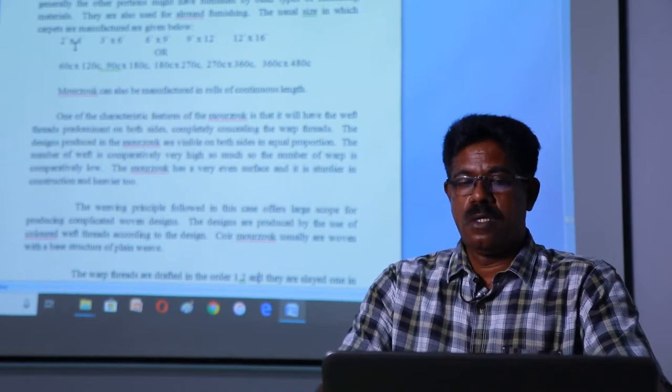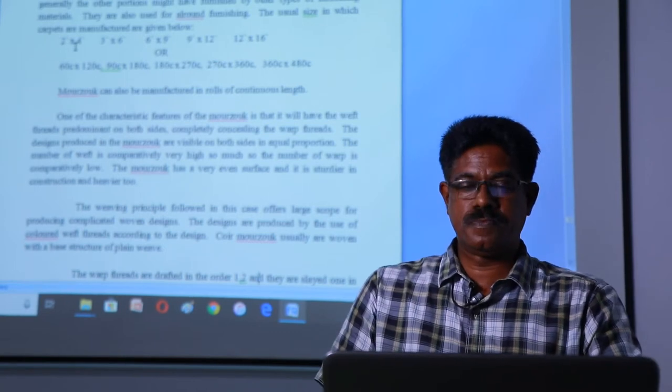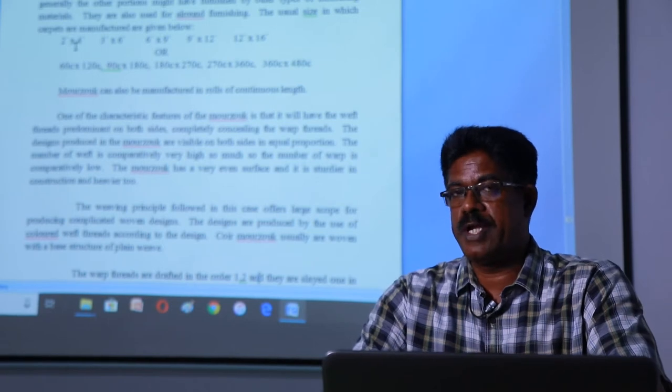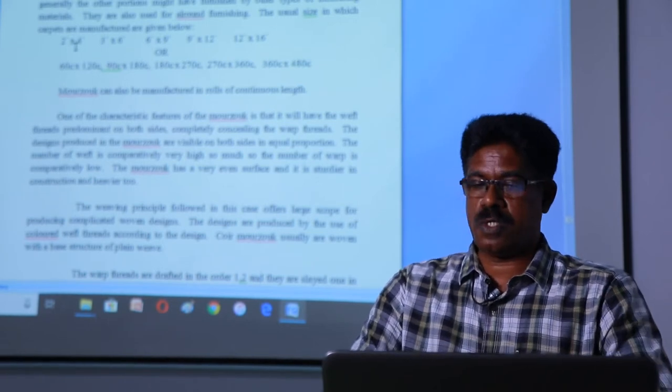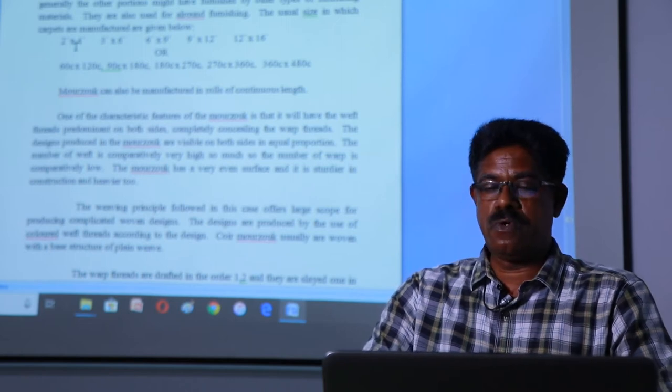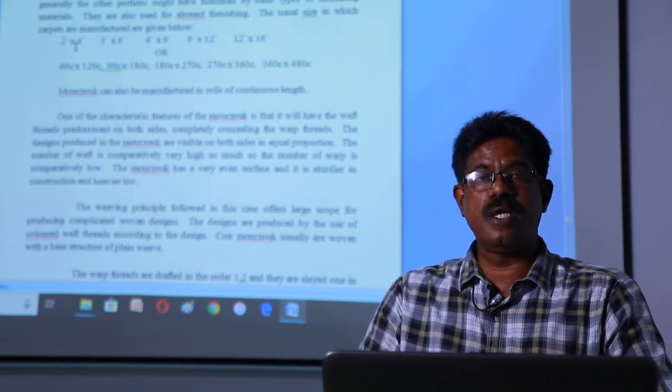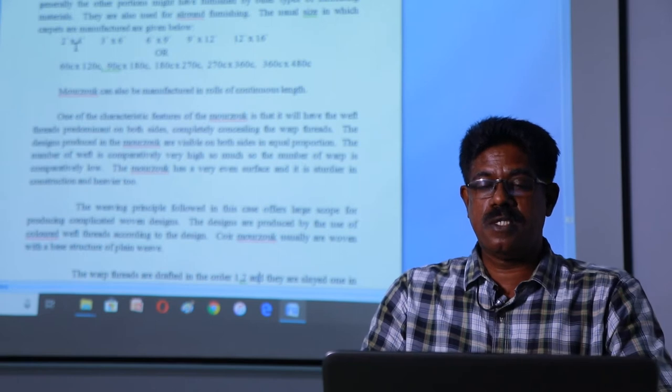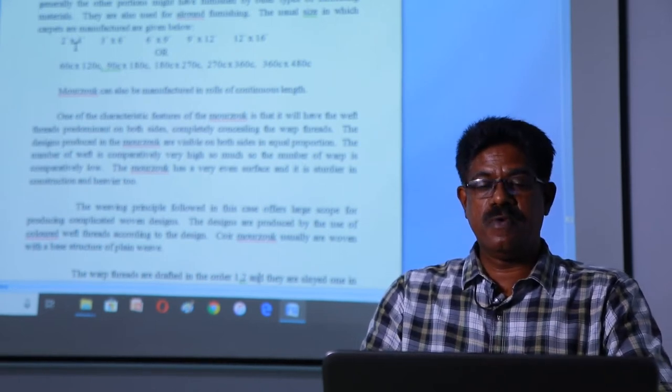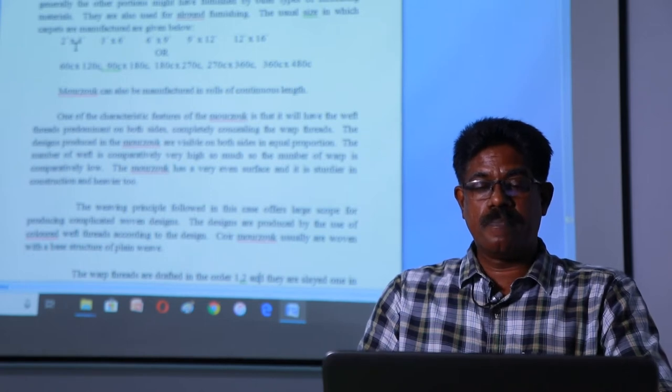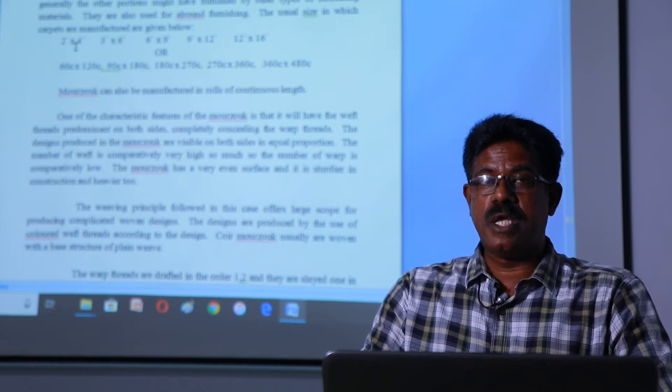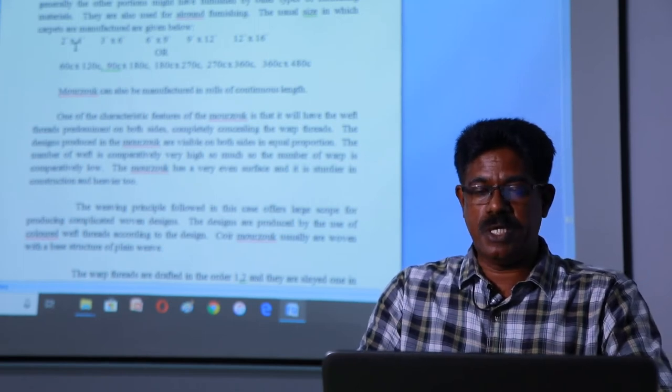A carpet in coir trade is called a marsuk. They are mostly used for furnishing a selected area either at the center of the room or any part there, where generally the other portions might have been furnished by other types of furnishing materials. The marsuks are also used for all-round furnishing.